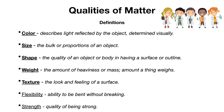Weight is the amount of heaviness or mass — the amount something weighs. I think that's pretty self-explanatory. Texture is the look and feeling of a surface. The top of my desk is very smooth; the outside of a rock is very rough. Those are the ways that you would describe texture.